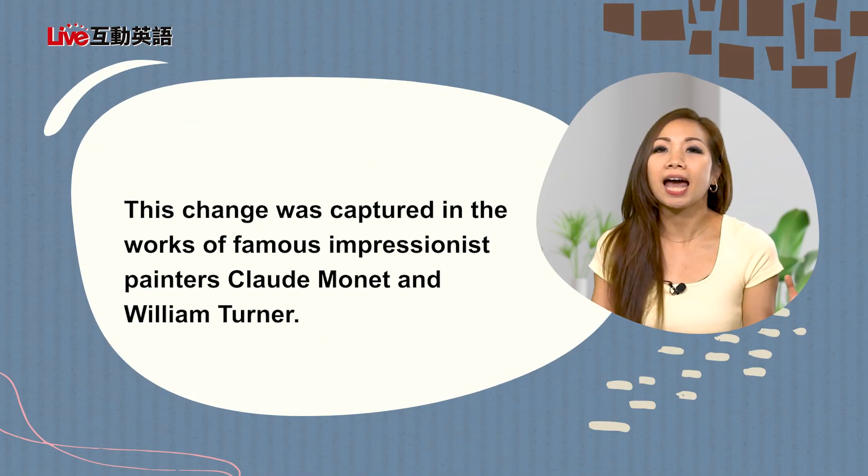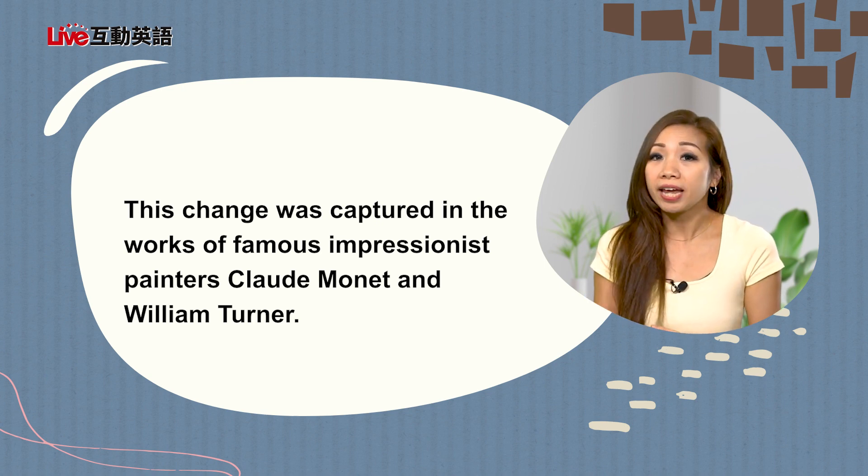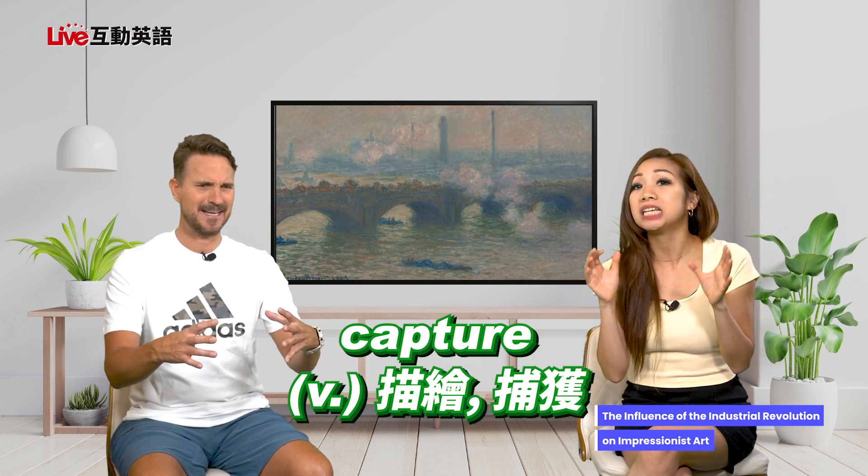This change was captured in the works of famous Impressionist painters Claude Monet and William Turner. These famous artists certainly captured this change in society. How do you capture a change? Well, they are artists — they create paintings. So they capture these things in their paintings. In the paintings they created, people can see the changes in society. You see it in their painting — in that sense, they captured it and then painted it.